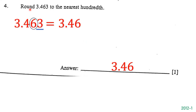The next question says: round 3.463 to the nearest hundredth. The ones place is 3, the tenths place is 4, and the hundredths place is 6, so we circle 6. The thousandths digit is 3, so we underline 3. Since 3 is less than 5, we do not round up — 6 stays the same. We drop the 3. The answer is 3.46.